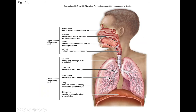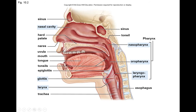Going to the next slide — here are the palatine tonsils found on either side of your throat if you open up your mouth. Here's the oropharynx, and this is the epiglottis.